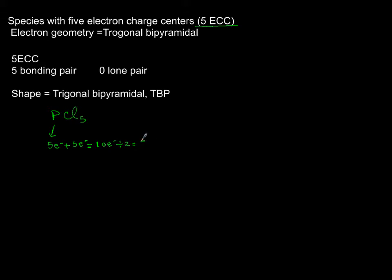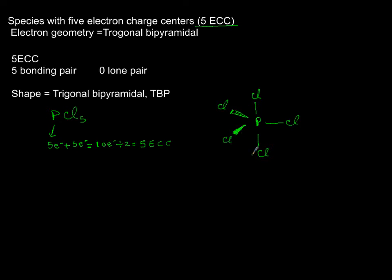To draw the shape, put phosphorus in the middle. Place one chlorine with a single dashed line, another chlorine up, another chlorine below — these three chlorines are on the same plane. Then use a wedge with dashes to show one chlorine coming toward you and a solid wedge for one going into the plane of paper. Make sure elements on the edges have their octet; only the central phosphorus can have an expanded octet. Each dashed line represents a pair of electrons.